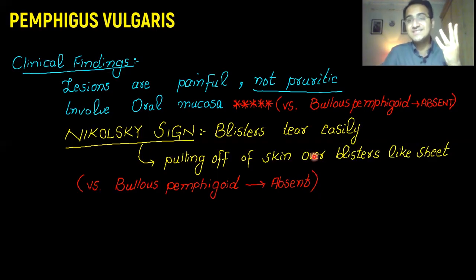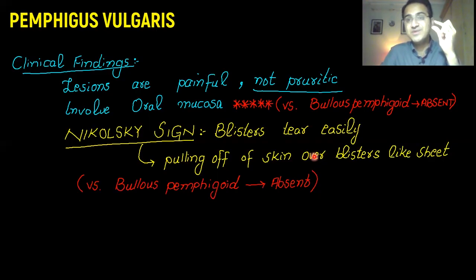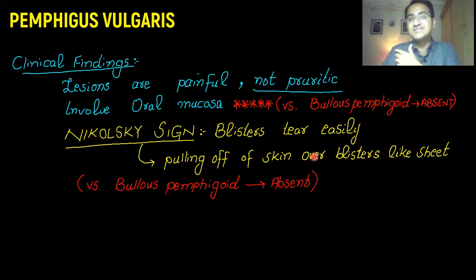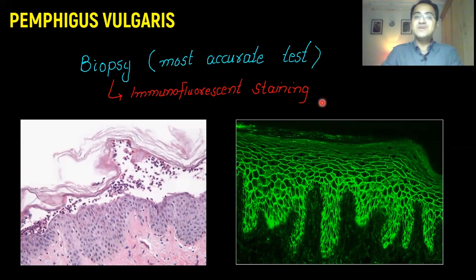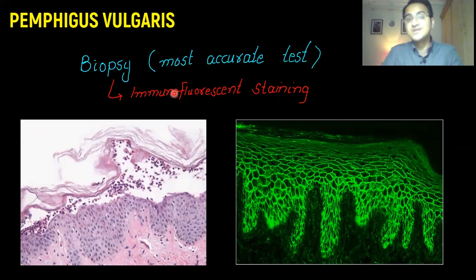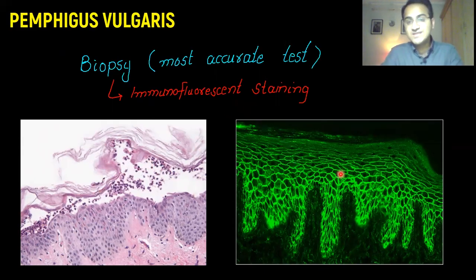This makes sense because the cells are not attached to each other in the epidermis, and whenever you apply a little force on these cells, they easily fall off, resulting in rupture of the blisters. For the diagnosis of Pemphigus vulgaris, biopsy is the most accurate test. On biopsy, either you view the cells directly under the microscope or you do immunofluorescent staining of the antibodies around the cells.